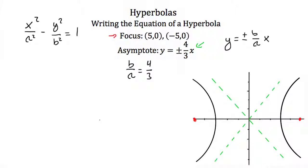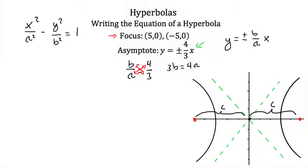That does not mean that b equals four and a equals three. But it does mean that if we cross multiply these ratios, 3b is equal to 4a. We know that our foci are a distance c away from the center. If our center is at (0, 0) and our foci are at positive 5 and negative 5 on the x-axis, that means c equals 5.